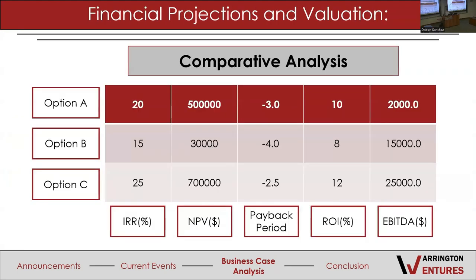Financial projections begin with competitive analysis — comparing different companies against each other to see how they compete and which company you should invest in. You look at different options and evaluate them against key performance indicators, or KPIs. Different companies in different fields are valued differently. In this example, the KPIs include internal rate of return, net present value, payback period, return on interest, and EBITDA. Whatever industry you're researching, you need to find the right KPIs for that field and use them to compare against other companies you might invest in.